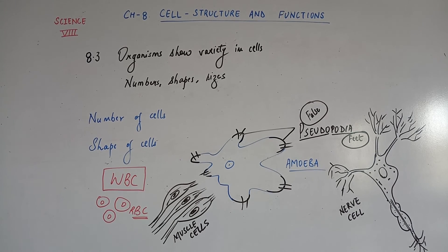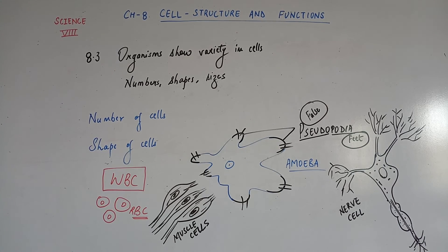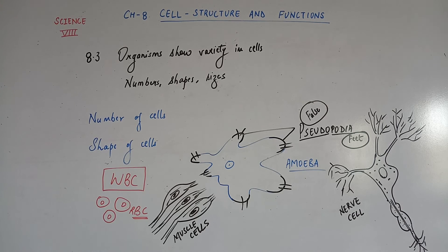Three types of cell shapes have been shown, each with a different function in the human body: RBC (red blood cells), muscle cells, and nerve cells. Generally, cells are either round, spherical, or elongated. Some cells can be long and pointed at both ends, giving them a spindle shape. Some cells, like nerve cells, are long but also have branches extending from them, like a neuron.